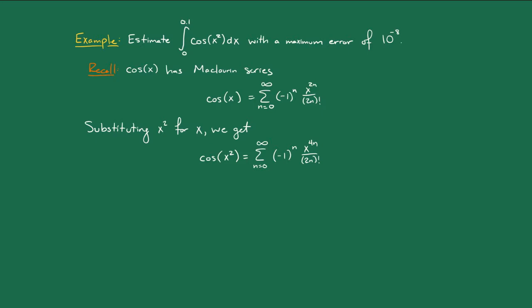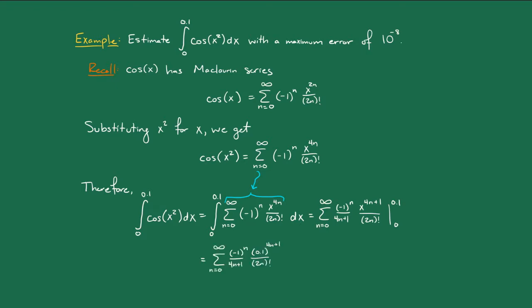Now we can integrate. We want the integral of cos(x²), so let's replace cos(x²) with the power series we just found, then integrate term by term and plug in our bounds. We get that the integral equals the sum from n=0 to ∞ of (-1)ⁿ / (4n+1) × (0.1)^(4n+1) / (2n)!.